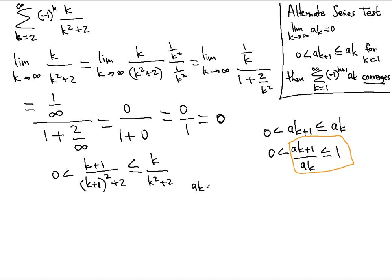So what are we going to have? The next term over the current term is going to be what? K plus 1 over k plus 1 squared plus 2. Now instead of dividing, since we're dividing by a fraction, let's flip this guy. So we're going to have k squared plus 2 over k.